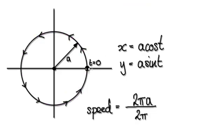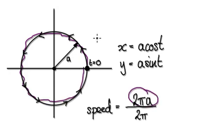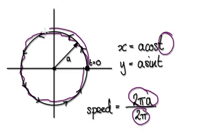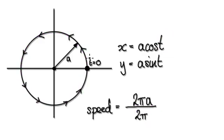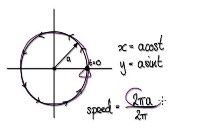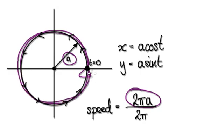If you want to know the speed, it would be the whole distance, which is the circumference of the circle of radius a, divided by the time it takes to do one revolution, which is 2π. So the speed here is a.